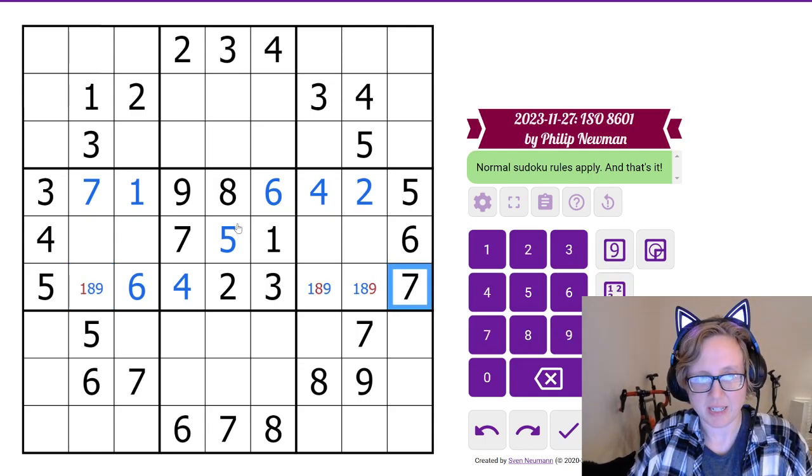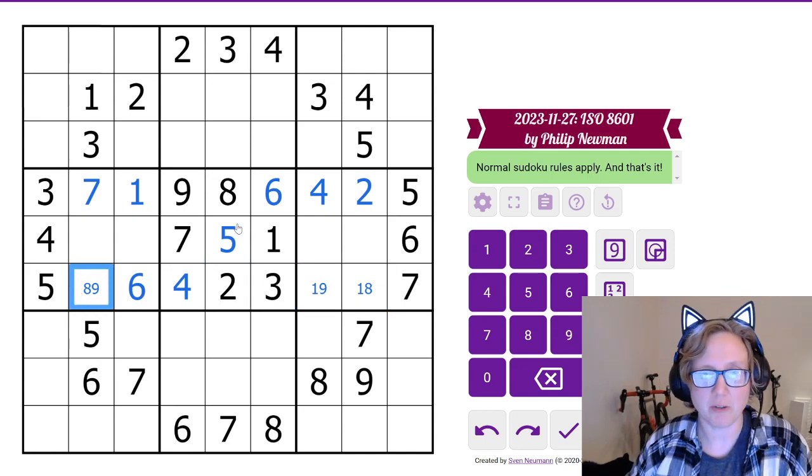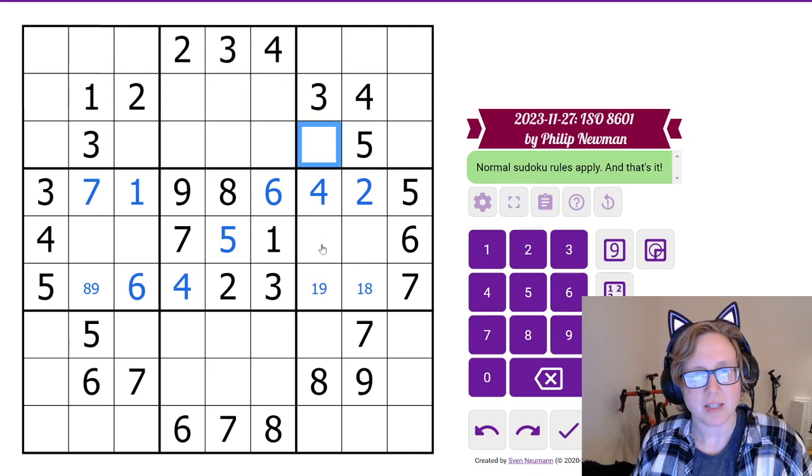This can't be a 9. That can't be an 8. And that can't be a 1. Now, if I look vertically, what do I see? Nothing that jumps out at me immediately.